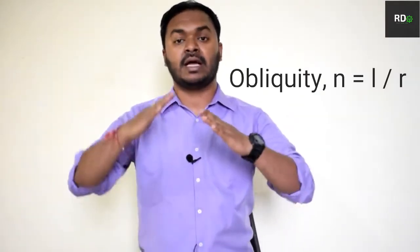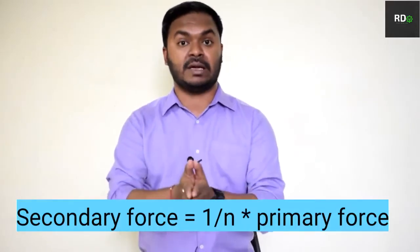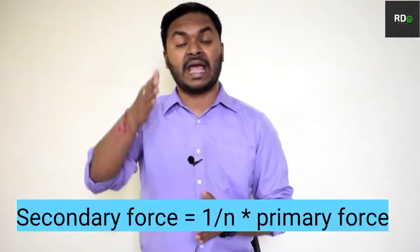The secondary unbalanced force is responsible due to the obliquity of the arrangement of the crank, connecting rod, and reciprocating mass. Obliquity is the ratio of the length of the connecting rod to the crank radius. The magnitude of the secondary unbalanced force is 1/n times that of the primary unbalanced force. For this reason, the secondary unbalanced force is neglected in low or moderate speed engines, but in high speed engines it is counted.